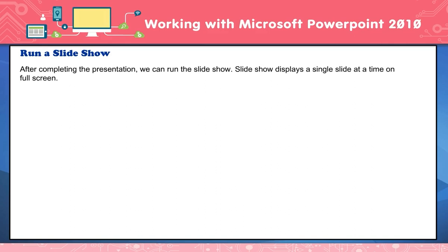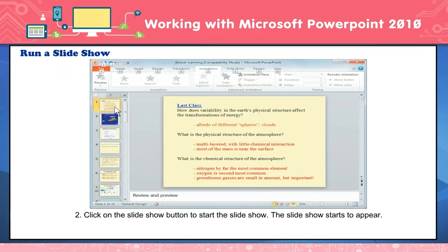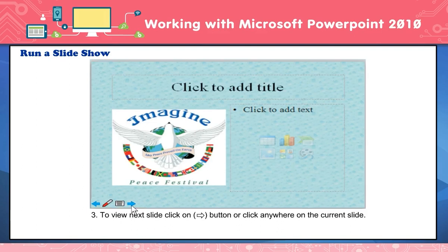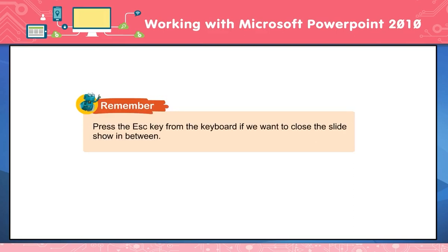Running a slideshow. After completing the presentation, we can run the slideshow. A slideshow displays a single slide at a time on full screen. To run a slideshow: click on the first slide. Click the Slideshow button to start. The slideshow starts. To view the next slide, click the next button or click anywhere on the current slide. To view the previous slide, click the back button or press the Backspace key. Keep pressing the button until the last screen appears, then click on the screen to exit the slideshow. Press the Escape key to close the slideshow at any point.